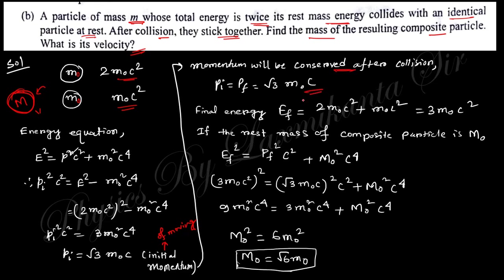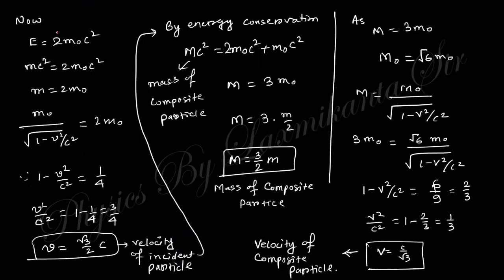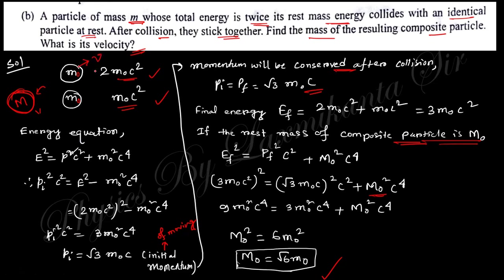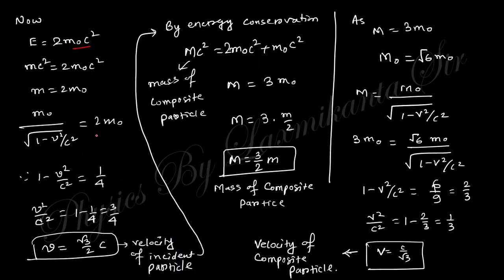By momentum conservation, the final momentum equals the initial momentum. The final total energy is 3*m_0*c². Let capital M_0 be the rest mass of the composite particle. Using E_f² = p_f²c² + M_0²c⁴, substituting the values, you obtain M_0 = √6 * m_0. Also, since total energy = 2*m_0*c², we get m = 2*m_0, and from m = gamma*m_0 we obtain the velocity v = (√3/2)*c of the moving particle.